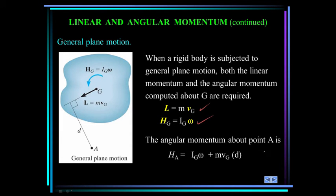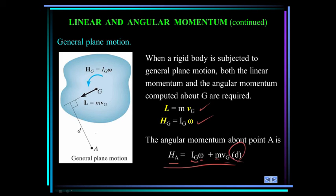The angular momentum about another point A, other than the mass center, is given by this equation. The angular momentum about point A equals the mass moment of inertia about G times omega, plus the mass times the velocity of the mass center times D, where D is the perpendicular distance between the velocity of the mass center vector and point A.